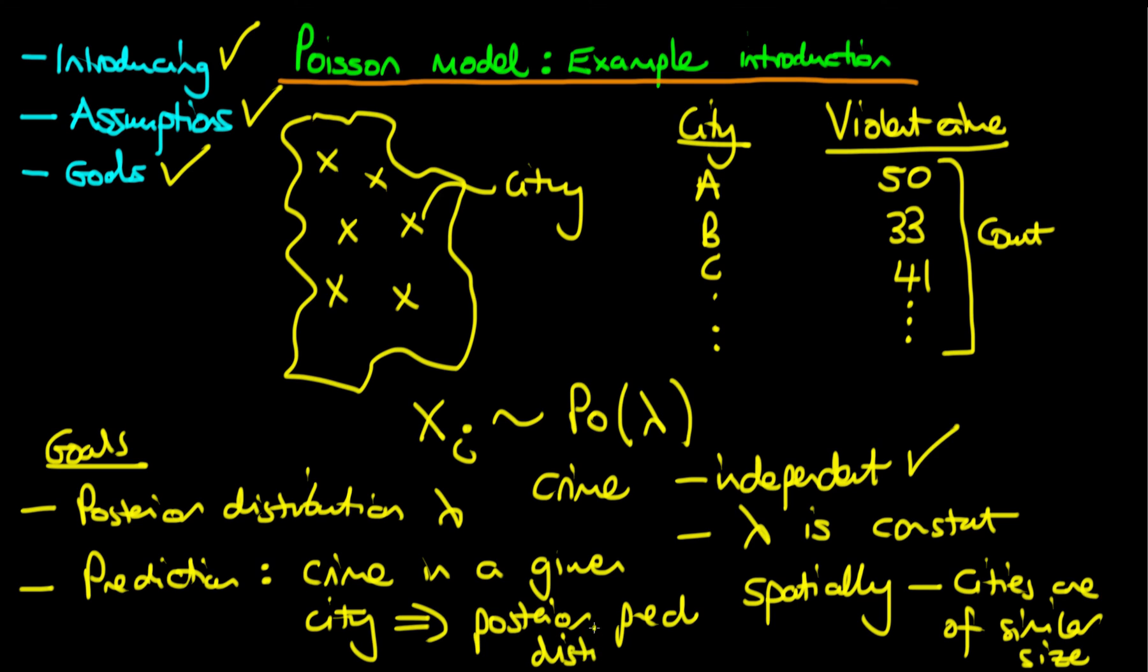And that illustrates which levels of crime we think are most likely given our data and our pre-experimental knowledge. And what we're actually going to do is contrast that with the prior predictive distribution, which is before we actually get the data, what would we expect the crime rate to be in a given city?